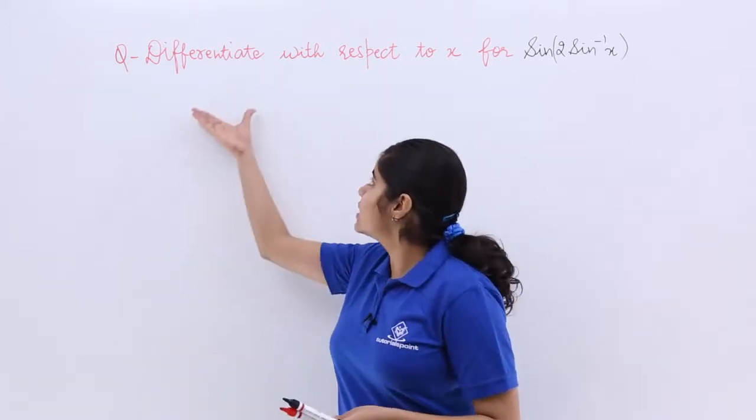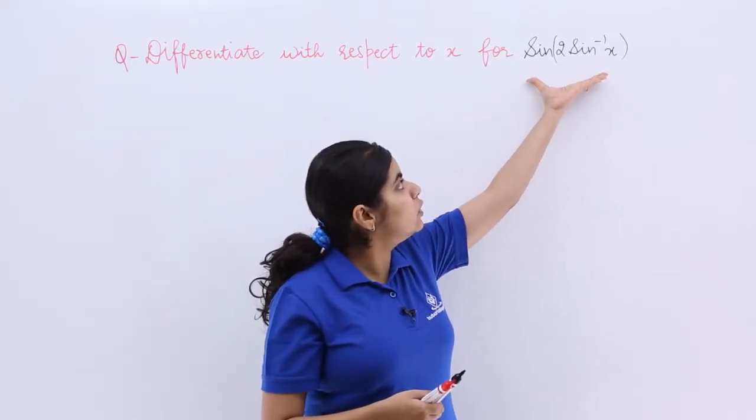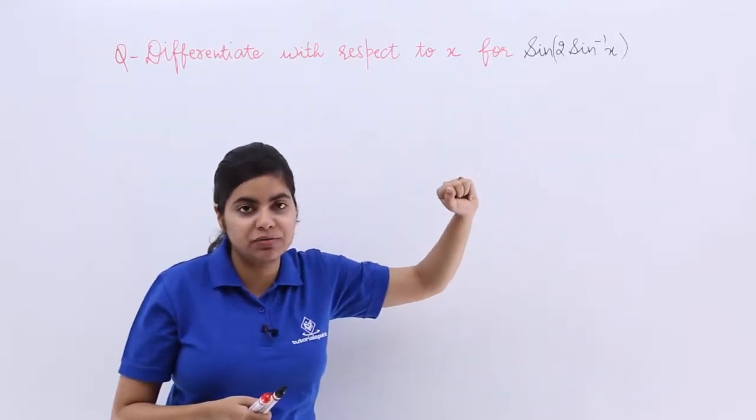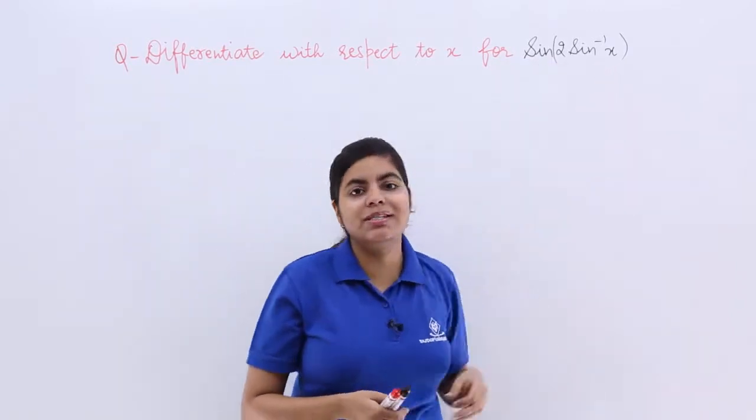The question says differentiate with respect to x for this whole thing that you have to differentiate with respect to x. It is sin of 2 sin inverse x.